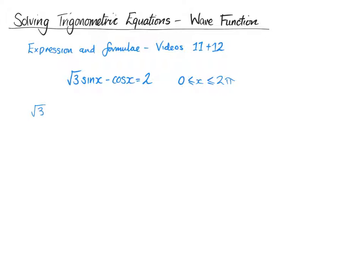Okay, so we're going to have to do square root of 3 sin x minus cos x, and we're going to have to make this equal to something. So we're going to have to pick one of our options. So it's either going to be k cos x plus or minus alpha or k sin x plus or minus alpha.